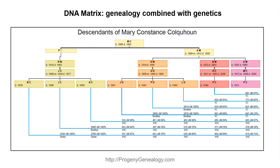My oldest cousin, B.C., recalled some strange statements made by her relatives, and we finally put the puzzle together. Ruby was not Alfred's daughter, but someone else's.